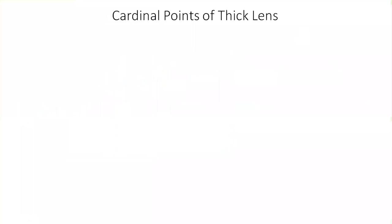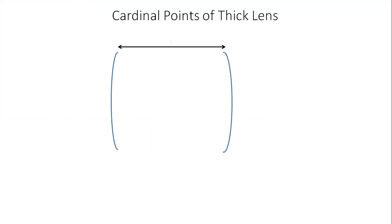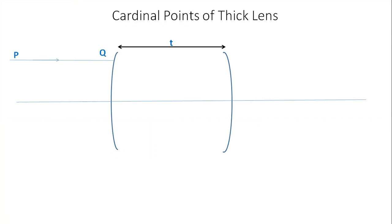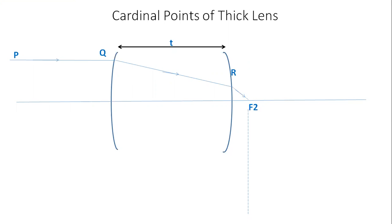Now let us define the second focal point and second principal point. We take the two spherical surfaces again. T is the thickness of the lens. The principal axis: P2 is the incident light, QR is the refracted light from the first spherical surface, and RF2 is the emergent light. F2 meets the principal axis, and this is the second focal point. At the second focal point, draw a plane passing through F2 and perpendicular to the principal axis — this is called the second focal plane.